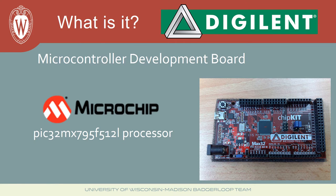The MAX32 is a microcontroller development board. As you can see in the graphic, there is a large surface mount component with 100 tiny leads coming off of it. This is Microchip's PIC32MX795F512L, one of their premier 32-bit MCUs. Digilent developed this board specifically for that chip, and we have decided to use it to control the pod thanks to its many features.